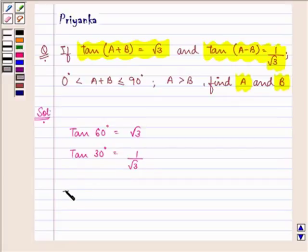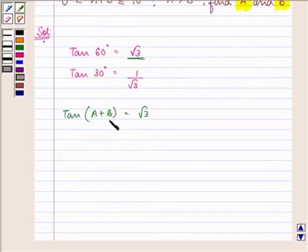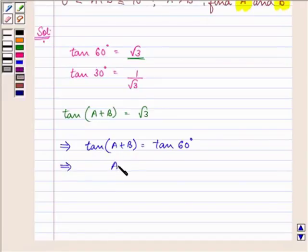Now, we are given that tan(A+B) is equal to root 3. But we have learnt in our previous classes that the value of root 3 is equivalent to tan 60 degrees. So, this implies we can write that tan(A+B) is equal to tan 60 degrees. This implies that the value of A+B will be equal to 60 degrees. Let us take this equation as 1.